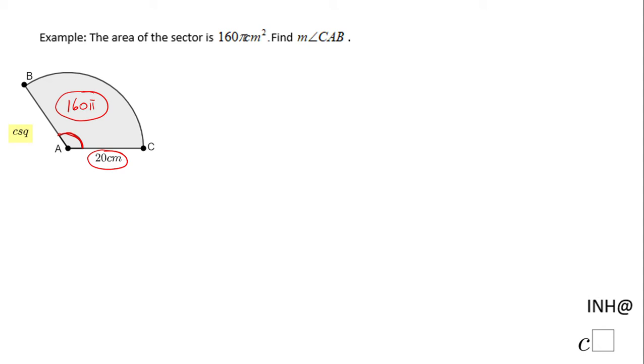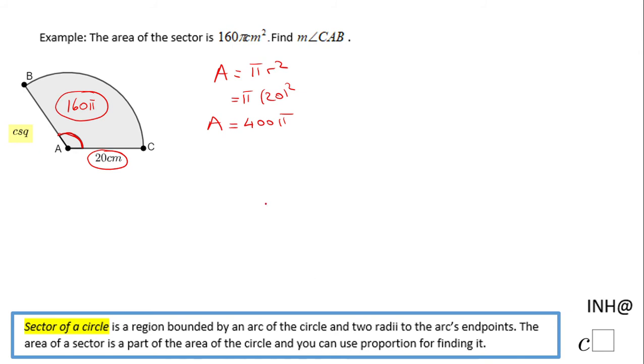For finding the central angle we're going to have first to find the area of the circle, which is πr². In our case the radius is 20, so we end up with 400π. This is the area of the whole circle and now we're going to use proportion because the sector is a part of the area of the circle.